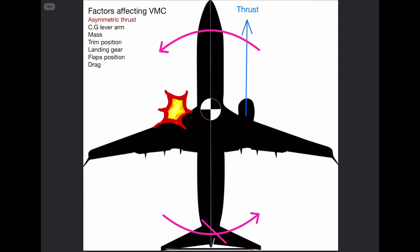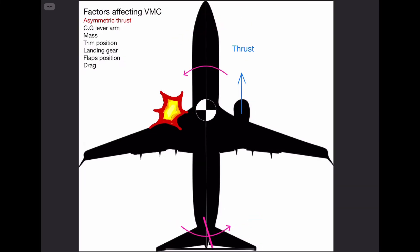I think asymmetric thrust is the most important factor regarding VMC. Without asymmetric thrust there's no reason for VMC to exist. A large asymmetric thrust requires a large force from the rudder to counter the yawing from the engine. So that means that less asymmetric thrust would require a lower speed at which the rudder can still counter the asymmetric yaw from the engine. A couple of examples come to mind. Number one, high altitude airports. Jet engines don't develop a lot of power at high altitude. Number two, jet engine derates. You're deliberately using less thrust for takeoff.